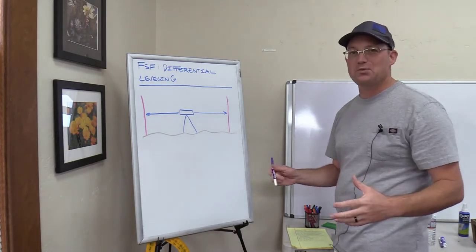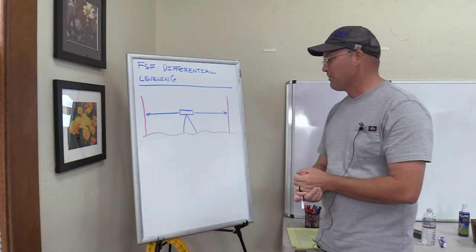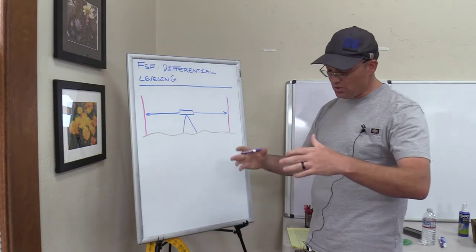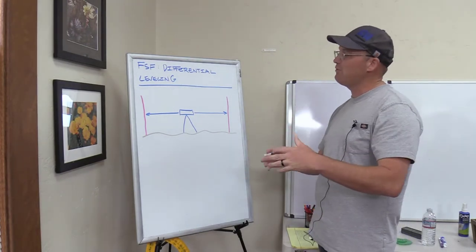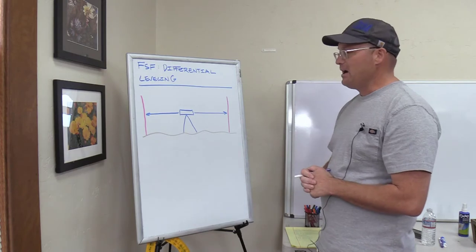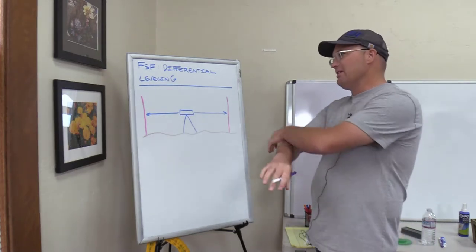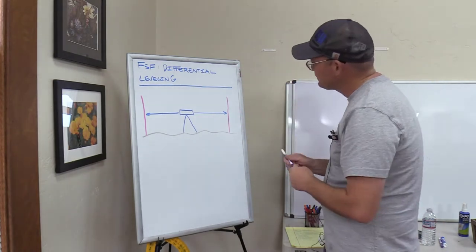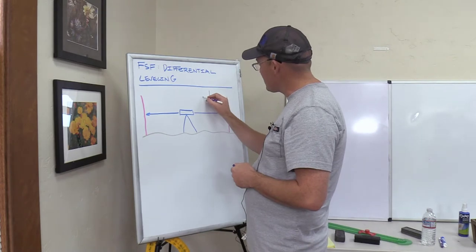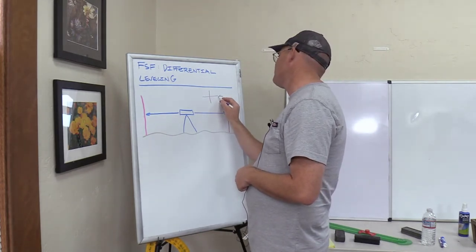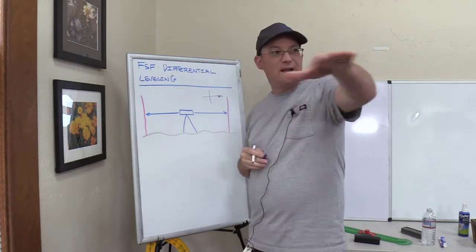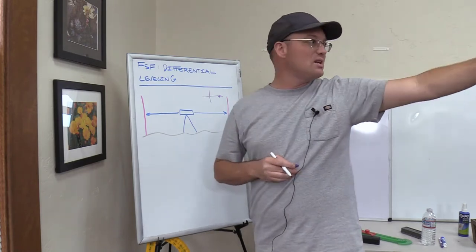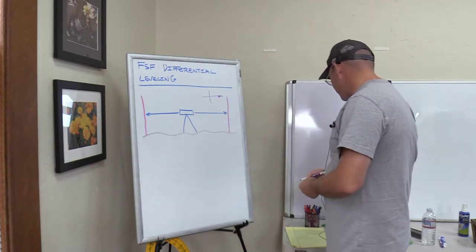So what is a differential level? A differential level is an instrument — we'll do a separate video that shows you a Philly rod and a level. A differential level is an instrument that, when you set it up and level it, it creates a level plane. When you look through the instrument at the crosshair, this horizontal crosshair basically forms a level plane. As you pivot the head of the instrument and swing that crosshair around, everything you see at that crosshair is at the same elevation.